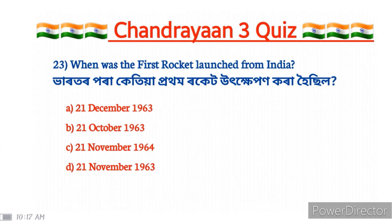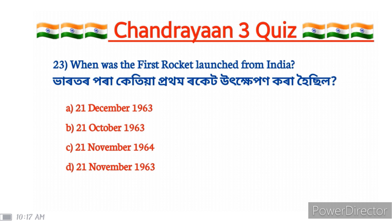When was the first rocket launched from India? The correct answer is option D: 21st November 1963.